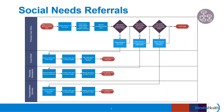Our final example is multi-organizational and depicts the process of referring individuals to various services based on identified health-related social needs. The four lanes include the primary care clinic, food shelf, housing assistance, and transportation services. The process map starts when a patient comes to the clinic for an annual exam and is given a health-related social needs screening. After the clinician completes the exam, the process map directs the clinician to answer three questions: Did the patient screen positive for food needs? If yes, make a referral to the food shelf. Did the patient screen positive for housing needs? If yes, make a referral to housing assistance. Did the patient screen positive for transportation needs? If yes, make a referral to transportation assistance. Then the clinician finishes the patient exam.